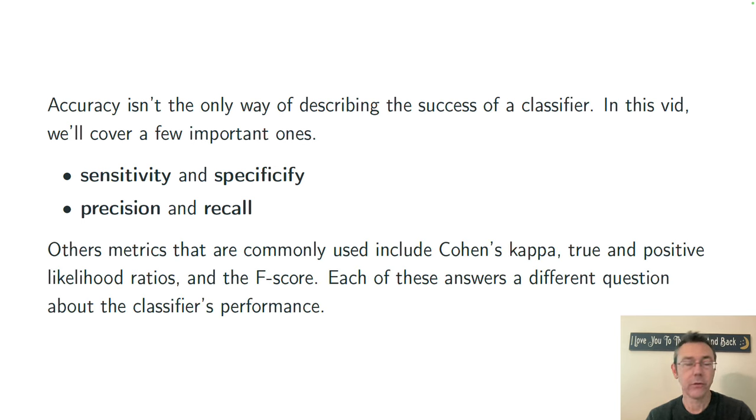There are a number of other measures. I am currently putting together a video on Cohen's kappa, which is essentially controlling the accuracy rate based on the probability of success using a random classifier. That's a sort of broadly speaking description of it. We could talk about the true and positive likelihood ratios. We could talk about the F-score. There's many other potential ways of looking at a confusion matrix and summarizing something about it numerically. Each of them answers a slightly different question about the classifier's performance. And so over the next few slides, I'm going to think about the words I have in boldface here. Sensitivity, specificity, precision, and recall.